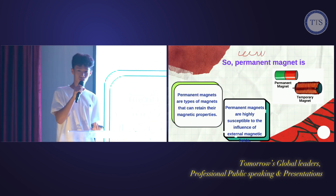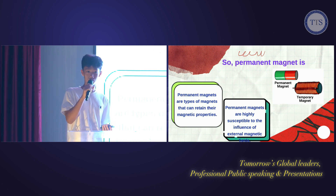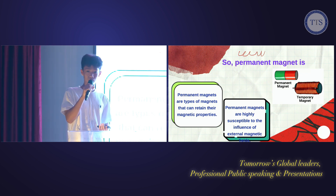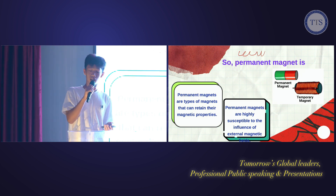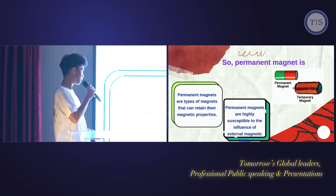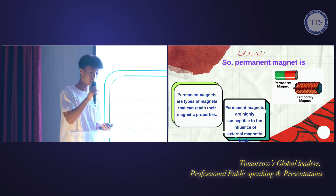Permanent magnets are magnets that can retain their magnetic properties for a relatively longer time than a temporary magnet. Permanent magnets are less susceptible to the influence of external magnetic fields.